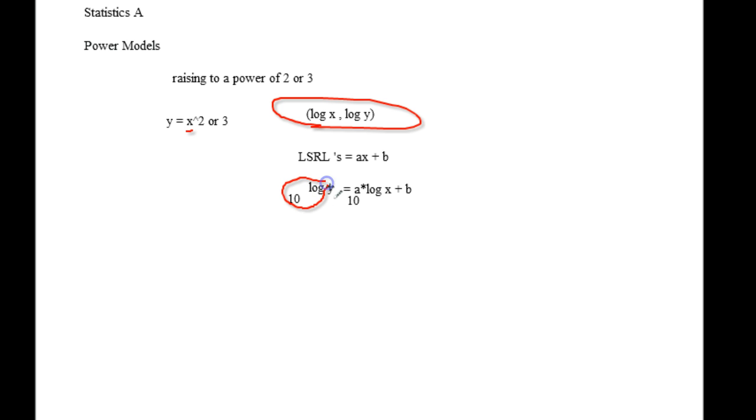Now what happens is when you raise it, this is going to be common log, so this is going to be log base 10. So on this side we actually have just y hat equals 10 to the power of a times log of x plus b. And that will be our actual way to get the LSRL formula for this.